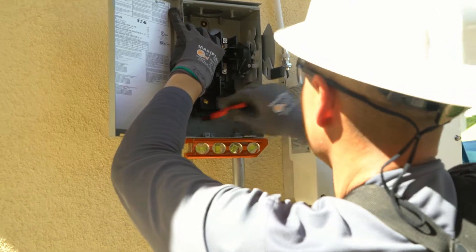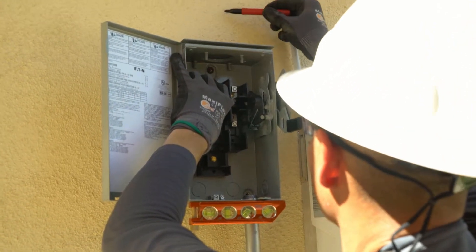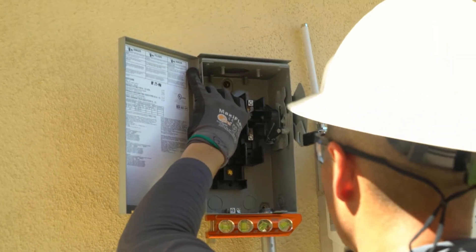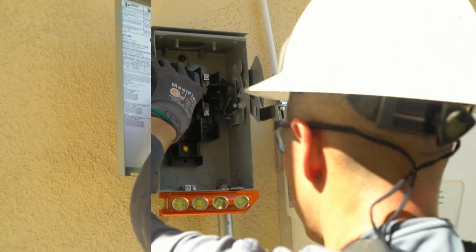Let's follow an actual install of an AC disconnect showing the steps similar to the simulation. Use a marking tool to mark off, in this case, the same three holes that we use to place the AC disconnect against the wall.